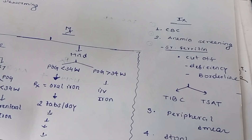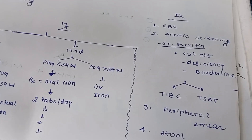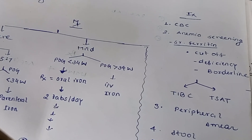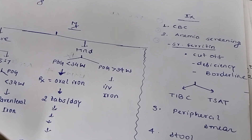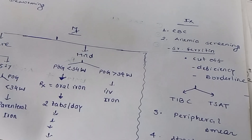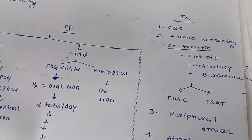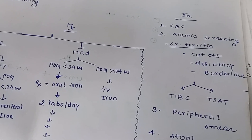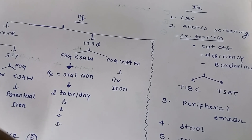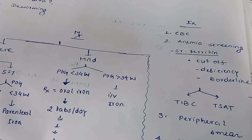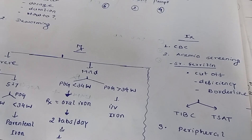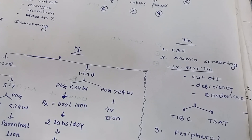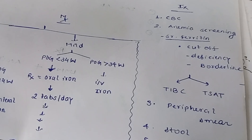If serum ferritin is borderline, we check total iron binding capacity (TIBC) and transferrin saturation. TIBC will increase because the iron binding sites are free, and transferrin saturation will decrease. Third investigation is peripheral smear, where we will see poikilocytosis, anisocytosis, and microcytic cells — all features of iron deficiency anemia. However, peripheral smear is not a good marker as it takes a long time to show effects.